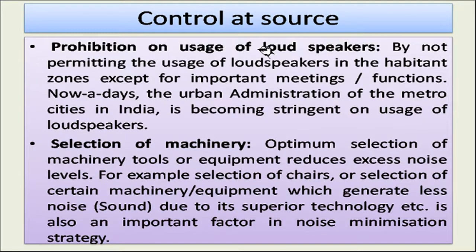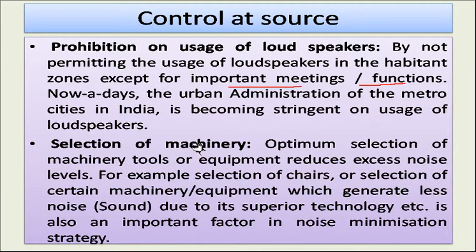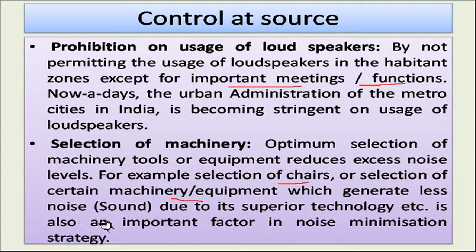Other methods of control at the source include prohibition on usage of loudspeakers. By not permitting loudspeakers in habitation zones except for important meetings or functions, noise can be reduced. Urban administration of metro cities in India is becoming stringent on this, but people still do not follow those rules. Selection of machinery is also important — optimum selection of machinery, tools, or equipment with superior technology that generates less noise is also an important factor in noise minimization strategy.